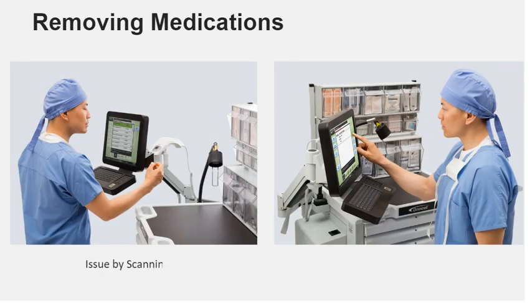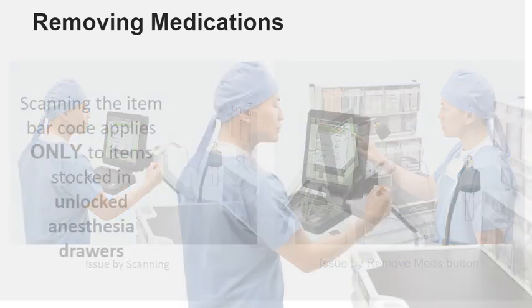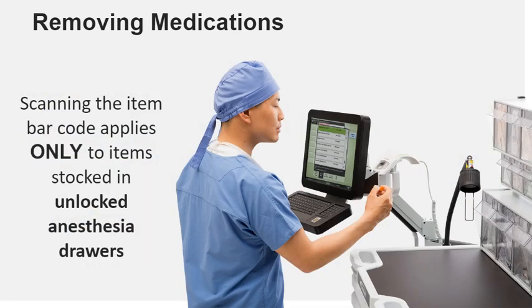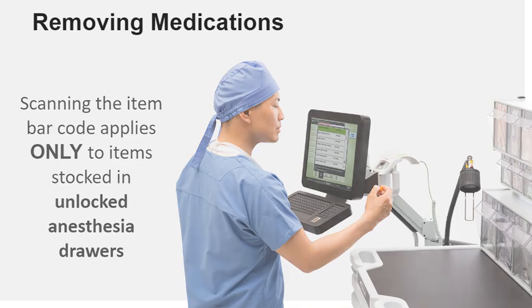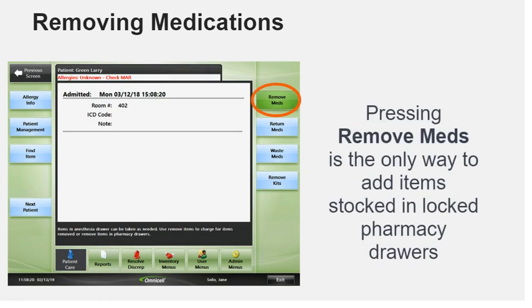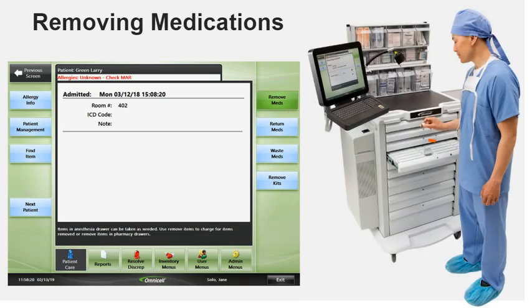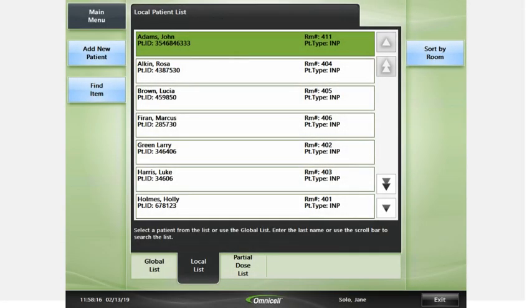Individual items can be issued by scanning the item barcode or by pressing Remove Meds on the screen. Scanning the item barcode applies to items stocked in unlocked anesthesia drawers only. Pressing Remove Meds is the only way to access items stocked in locked pharmacy drawers. The guiding light will guide you to the locked medication compartment. To begin removing medications for a case, select the patient from the local list.